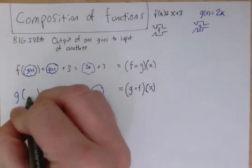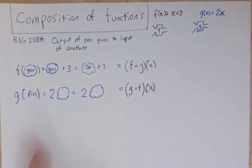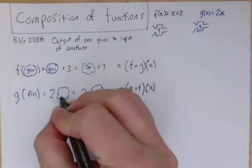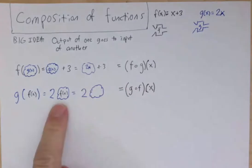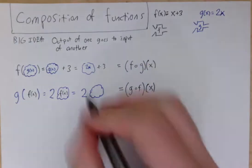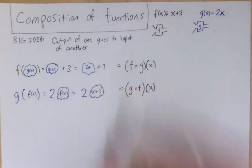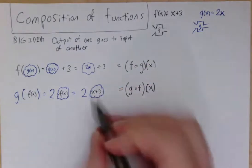So if I take the g function of the f function, that's like substituting in the entire f function as the input for g. And if I replace the name f of x with the actual expression that defines f of x, that gives us 2 times the quantity x plus 3.